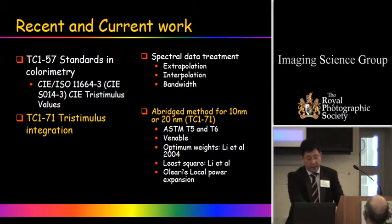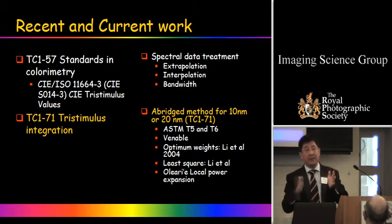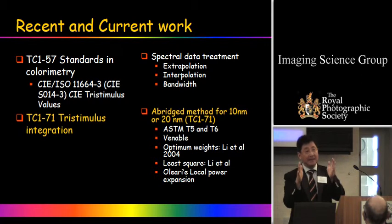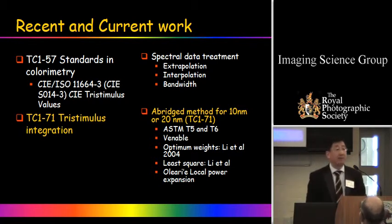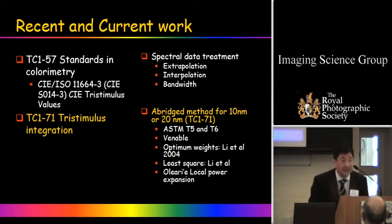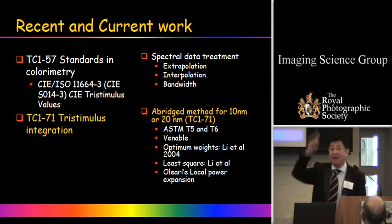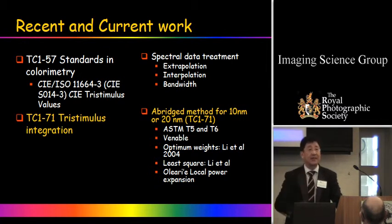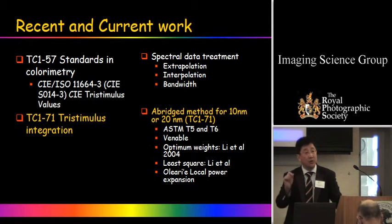TC1-71 is looking at tristimulus integration — the abridgment problem. The current standard recommends computing weighting tables from 1 nm data. If you have a 10 nm or 20 nm instrument, how do you get a good weighting table? Various methods have been proposed and CIE is trying to standardize this. For example, using 20 nm data with F11 — a tri-band, very sharp spectrum — can result in large color differences. Similarly, LED narrow-band spectra could also cause big problems.